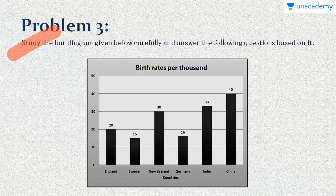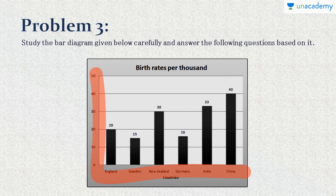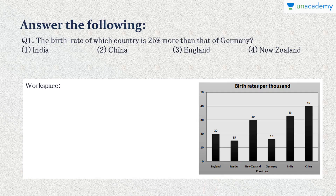Problem 3: Study the bar diagram given below carefully and answer the following questions. The diagram shows birth rates per thousand for different countries: England, Sweden, New Zealand, Germany, India, and China.